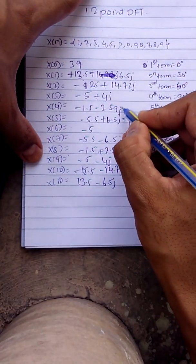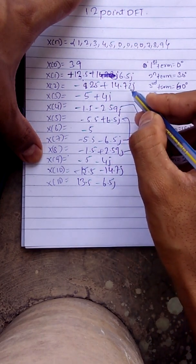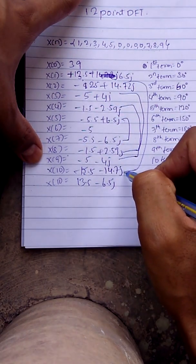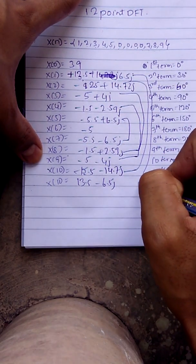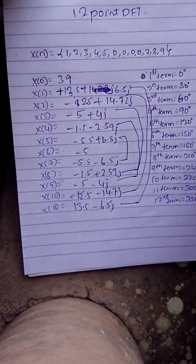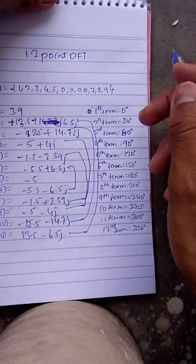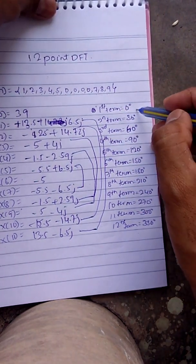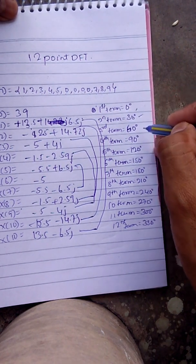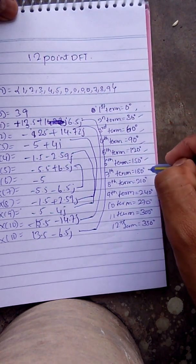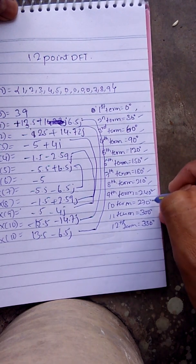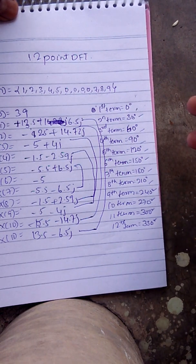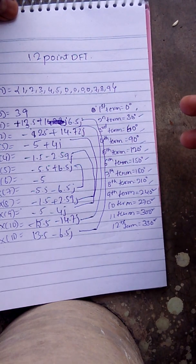Here, X(1) is the complex conjugate of X(11), X(4) is the complex conjugate of X(8), X(3) is the complex conjugate of X(9), X(2) is the complex conjugate of X(10), and X(1) is the complex conjugate of X(11) — showing we are finding the correct values. The difference between each term's angle is 30, 60, 90, 120, 150, 180, 210, 240, 270, 300, 330. By this way you can enter the inputs. Thank you — if you have any doubts please comment in the comment box, and please like, subscribe, and share.